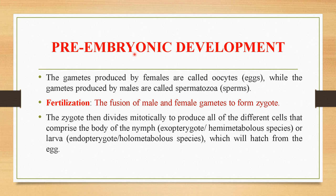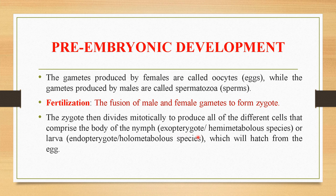The first step is preembryonic development. The female gametes are called oocytes or eggs, while the gametes produced by males are called spermatozoa or sperms. Fertilization is the process of fusion of the male and female gametes to form a zygote. The formed zygote then divides mitotically to produce all the different cells comprising the body of a nymph in the case of exopterygote or hemimetabolous species, or larvae in the case of endopterygote or holometabolous species, which will hatch from an egg.